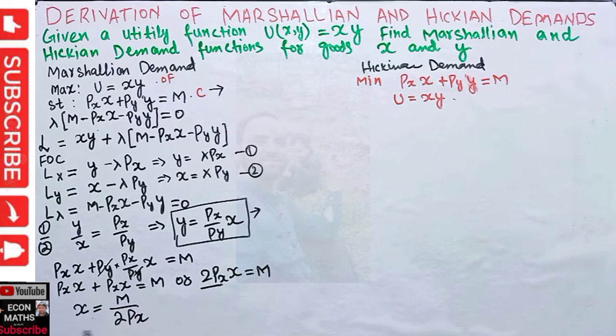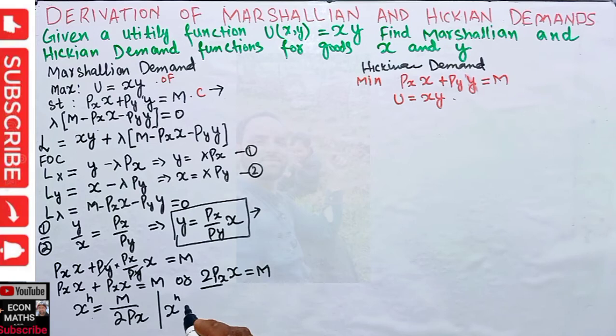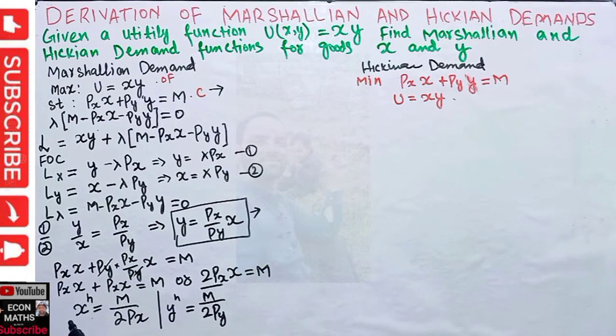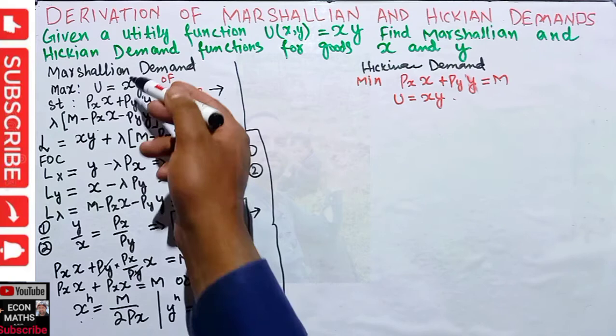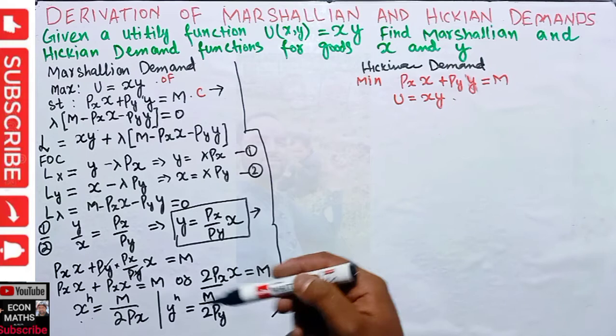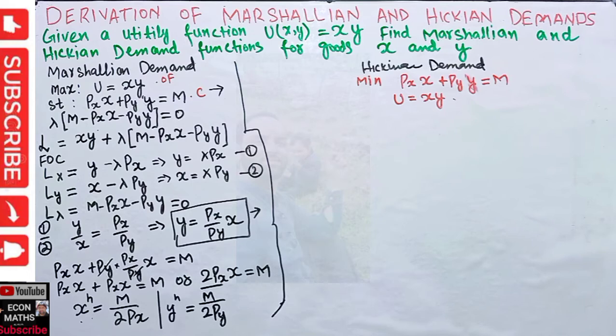So the Marshallian (uncompensated) demand function for good x is xM = M / (2Px), and similarly the Marshallian demand function for good y is yM = M / (2Py). I have shown you how to derive these demand functions.